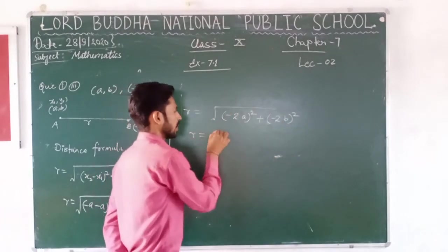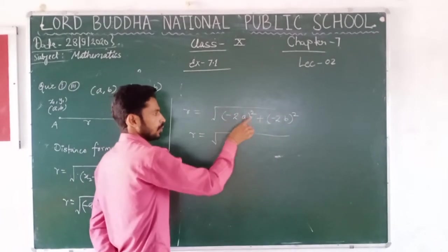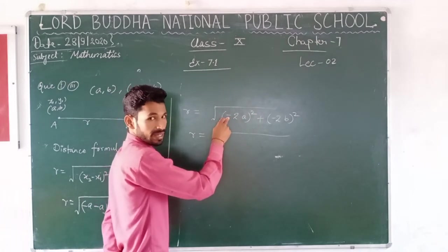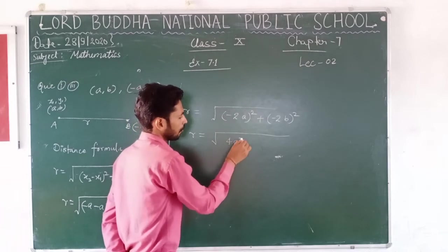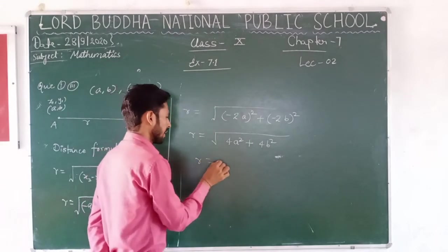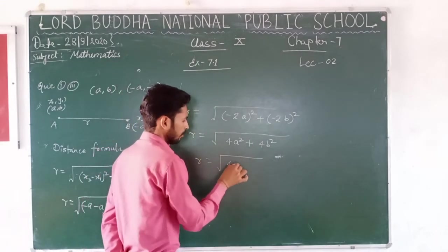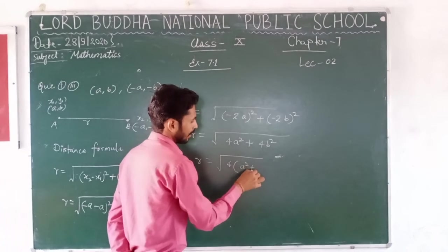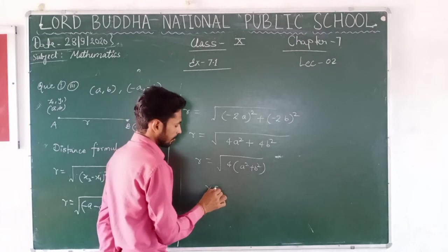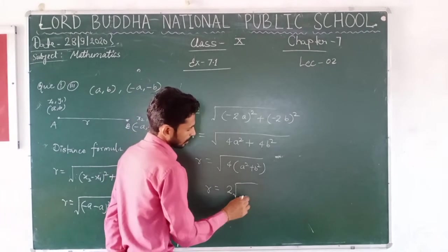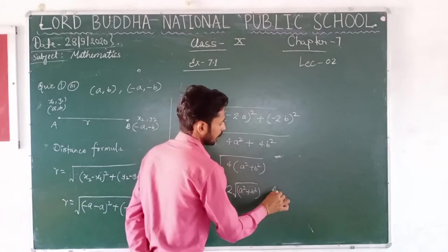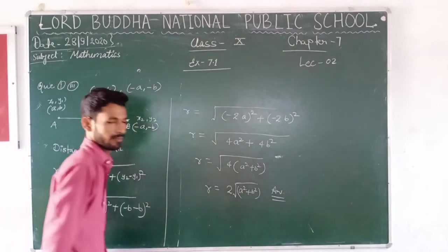Now r equals to square root of: when we square minus 2a it gives 4a squared, and squaring minus 2b gives 4b squared. We can take 4 as common, so r equals to square root of 4 times (a squared plus b squared), which gives the answer 2 root (a squared plus b squared). That is the answer — clear.